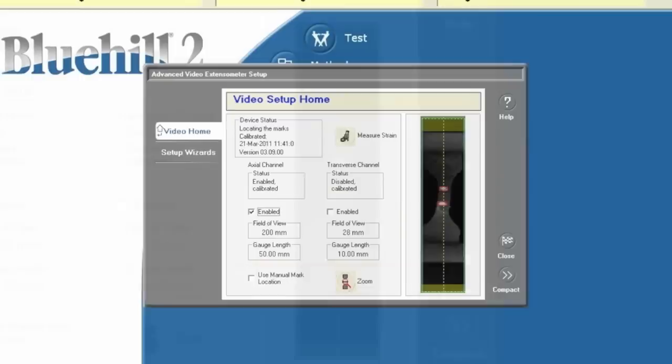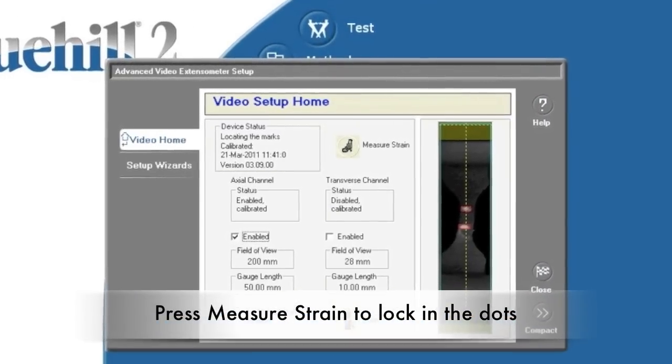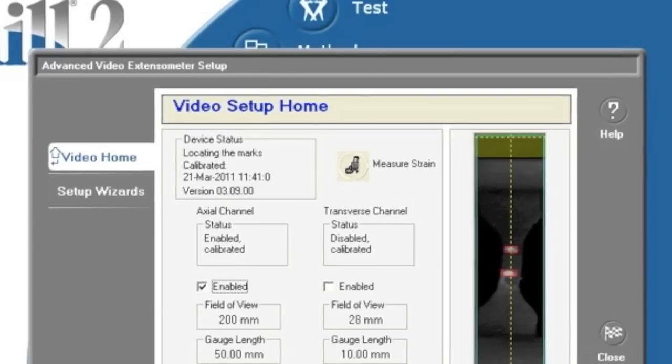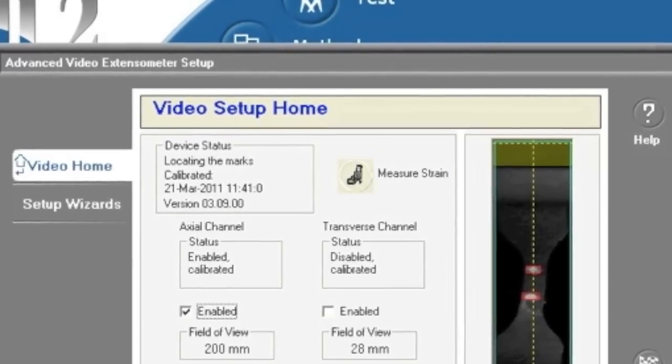Once the red boxes appear, press the measure strain button. The distance between the dots or the gauge length will be displayed on the screen. This will lock the dots into the software so the gauge length will be monitored throughout the experiment.